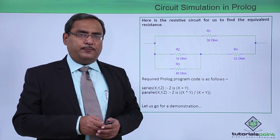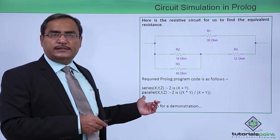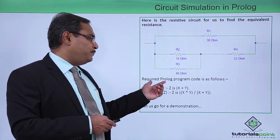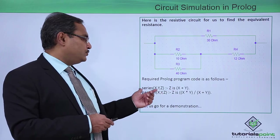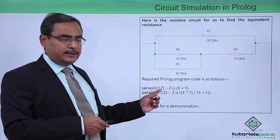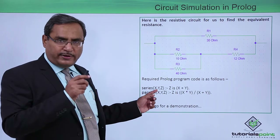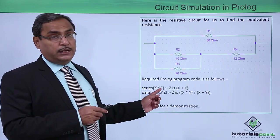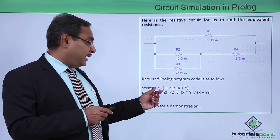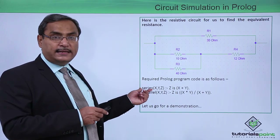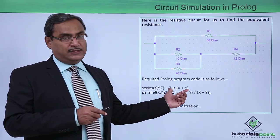But how to write it in the Prolog code? Here we have some suggestions. The required Prolog program code will be as follows. For series: series(x, y, z) — here x and y will be 2 input resistances and z will be the equivalent resistance when x and y are connected in series, so z is x plus y.